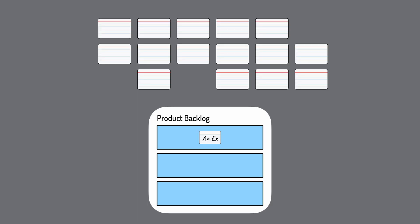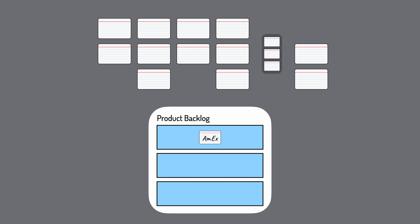Second, because a column of cards represents different ways of doing something, the entire column can become one product backlog item. If our map has a column of different ways to pay, that column can become one big product backlog item.